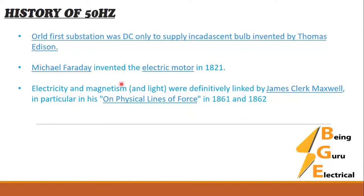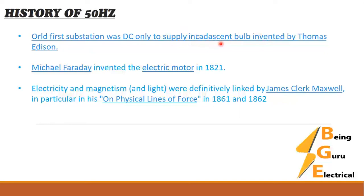If you go to the history, the first substation which was designed was a DC substation, because it was used to supply incandescent bulbs. The incandescent bulb was invented by Thomas Edison, and they built one substation which was used to light these incandescent bulbs. That was the first substation.